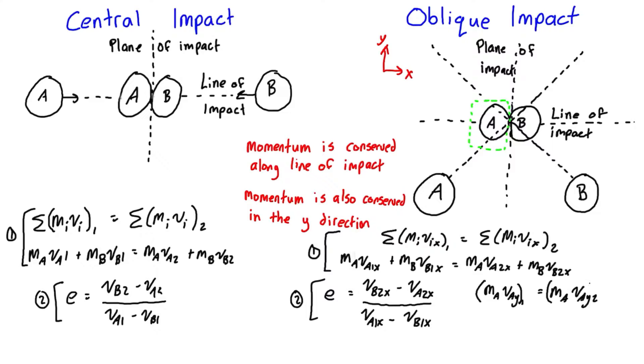We're gonna do the exact same thing for the object labeled B, so it's going to be m_B times v_By1.